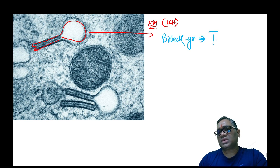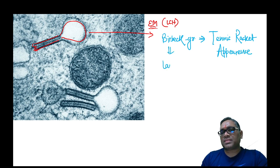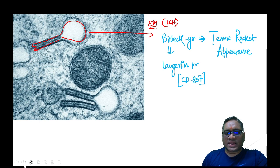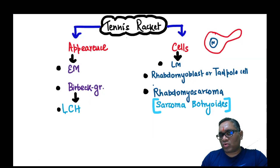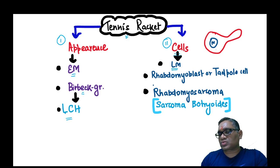The Birbeck granule gives us the tennis racket appearance. The examiner can ask what protein is involved — it is Langerhans protein — and the CD marker for this is CD207. So tennis racket appearance refers to the Birbeck granule seen on electron microscopy in Langerhans cell histiocytosis, while tennis racket cells are seen on light microscopy.